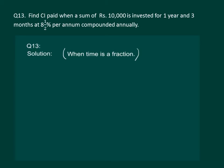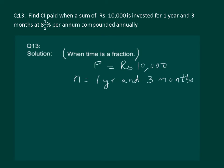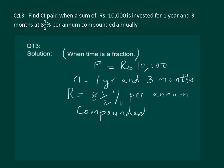Note here that interest is compounded annually while the time is one year and three months. To calculate this, let us first write down all the given values: principal is equal to rupees 10,000, time is one year and three months, and rate of interest is eight and a half percent per annum compounded annually.